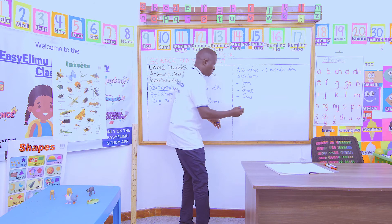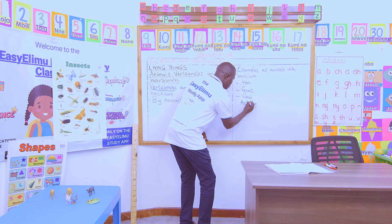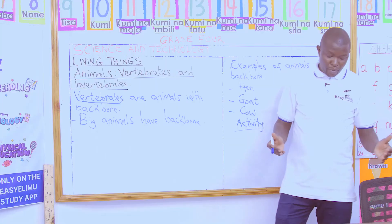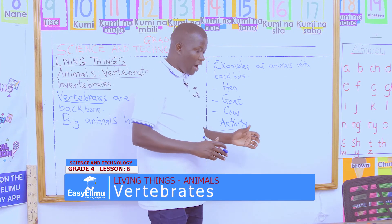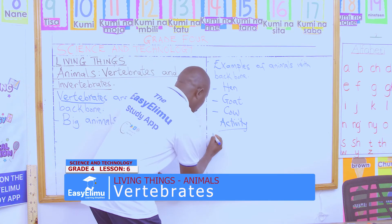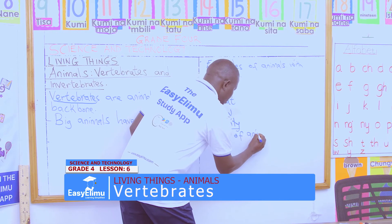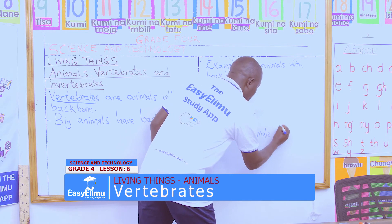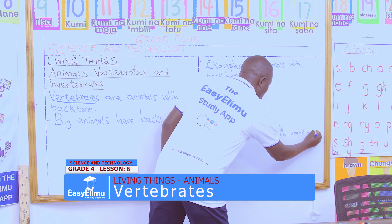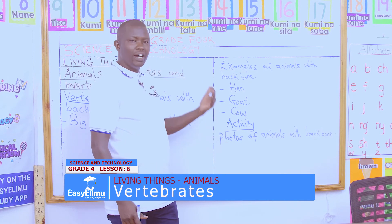This is the activity for you to do at home. With the help of your parents, kindly take the tablet of your parents and take photos of animals with a backbone. Print those photos so that you can stick them in our portfolio.